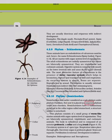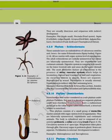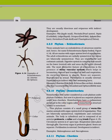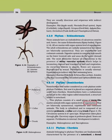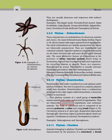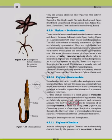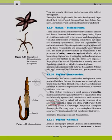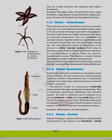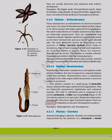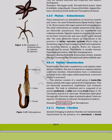Phylum Hemichordata: Earlier considered a sub-phylum under Chordata, now placed as a separate phylum under non-Chordata. Hemichordates have a rudimentary structure called stomochord in the collar region, similar to a notochord. This phylum consists of small, worm-like marine animals with organ system level of organization, bilaterally symmetrical, triploblastic, and coelomate. The body is cylindrical, composed of an anterior proboscis, a collar, and a long trunk. Circulatory system is open type; respiration occurs through gills; excretory organ is the proboscis gland. Sexes are separate; fertilization is external. Examples: Balanoglossus and Saccoglossus.